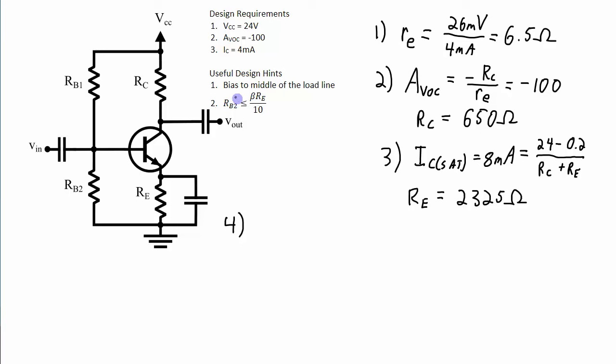Step number 4, I can figure out the upper limit for my RB2. RB2 has to be less than or equal to beta RE over 10. So again this is a 3904 transistor, let's assume that it has a beta value that ranges. So for this inequality, we'll have to assume that our beta is going to be the smallest possible. So I want RB2 to be less than or equal to 100 times RE divided by 10 and that works out to 23250 ohms. So let's just pick a value that's something less than that so let's go with RB2 of 20 kilo ohms.